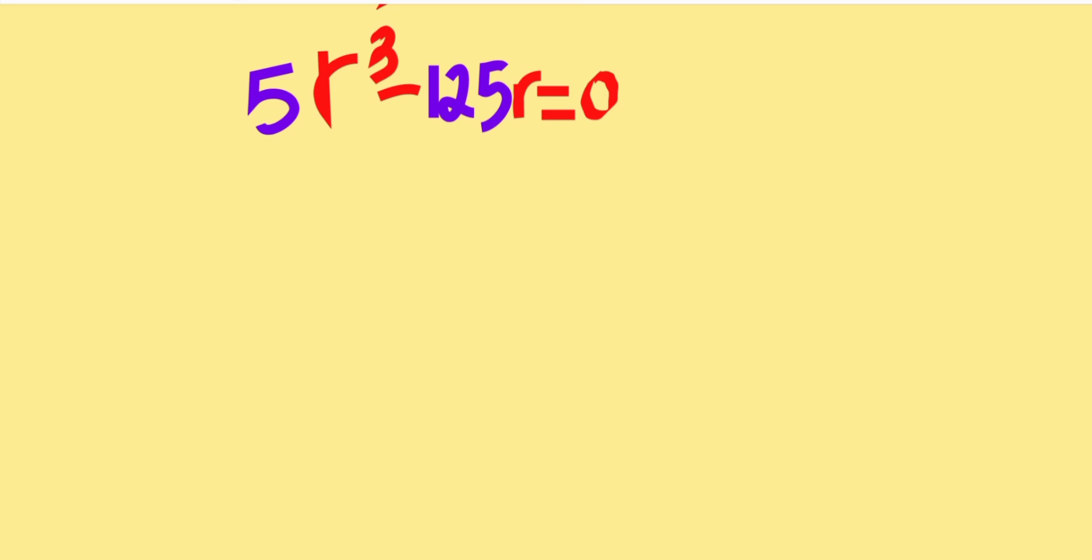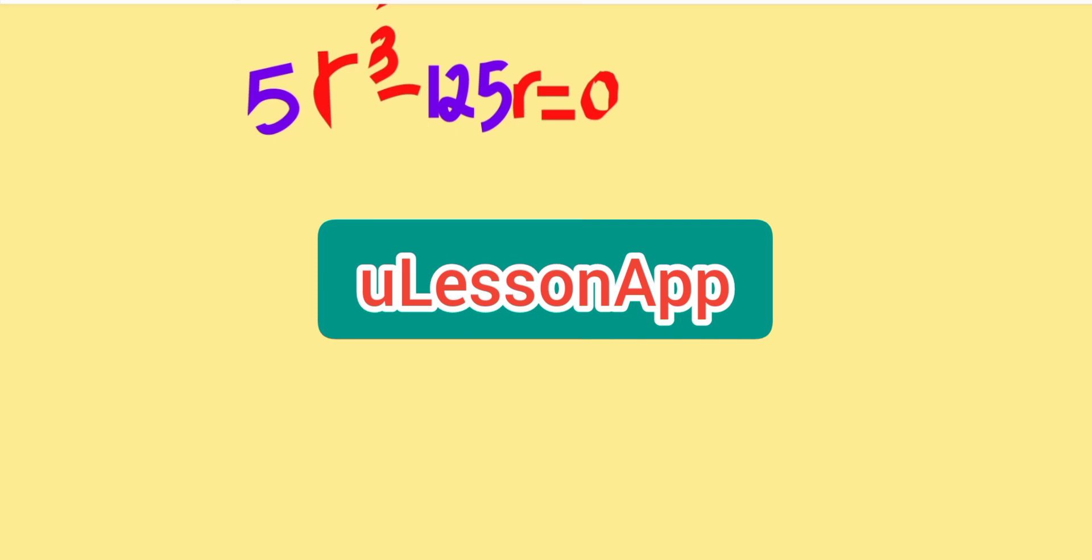Do not forget that this video is proudly powered by your lesson app. So we have 5R to the power of 3 minus 125R, everything equal to 0.